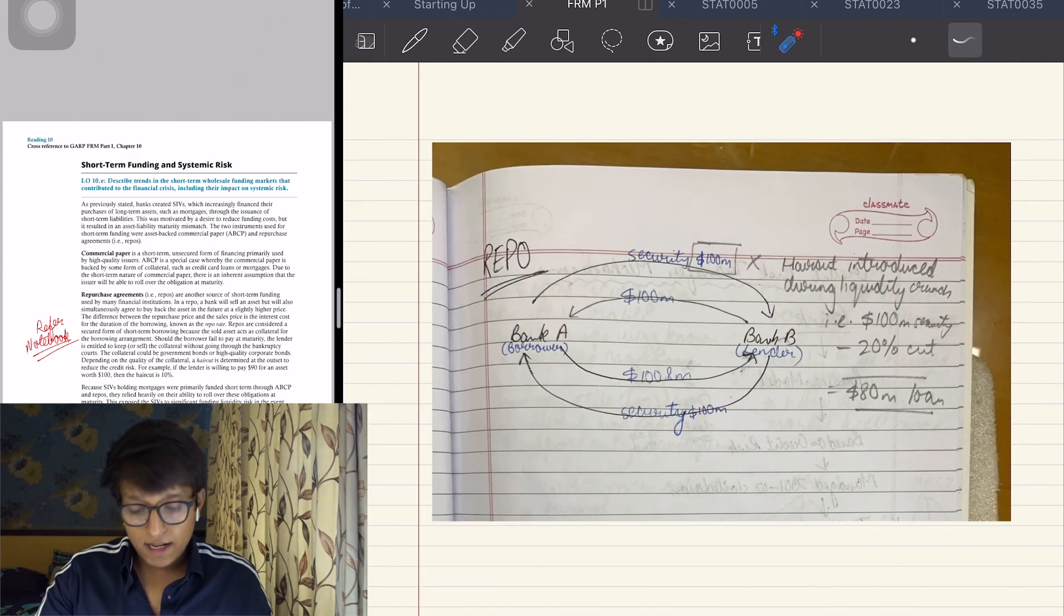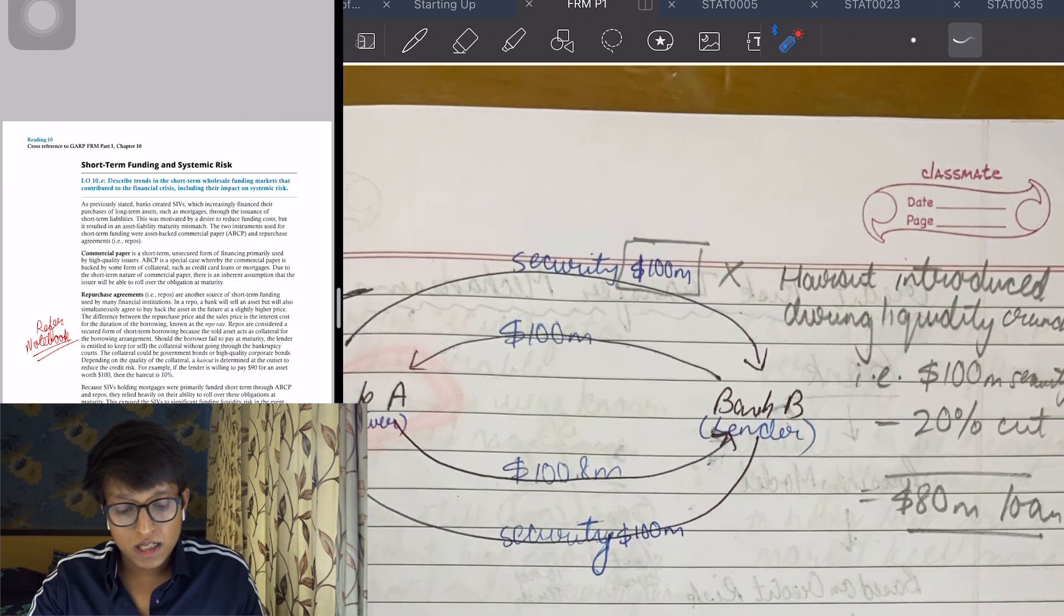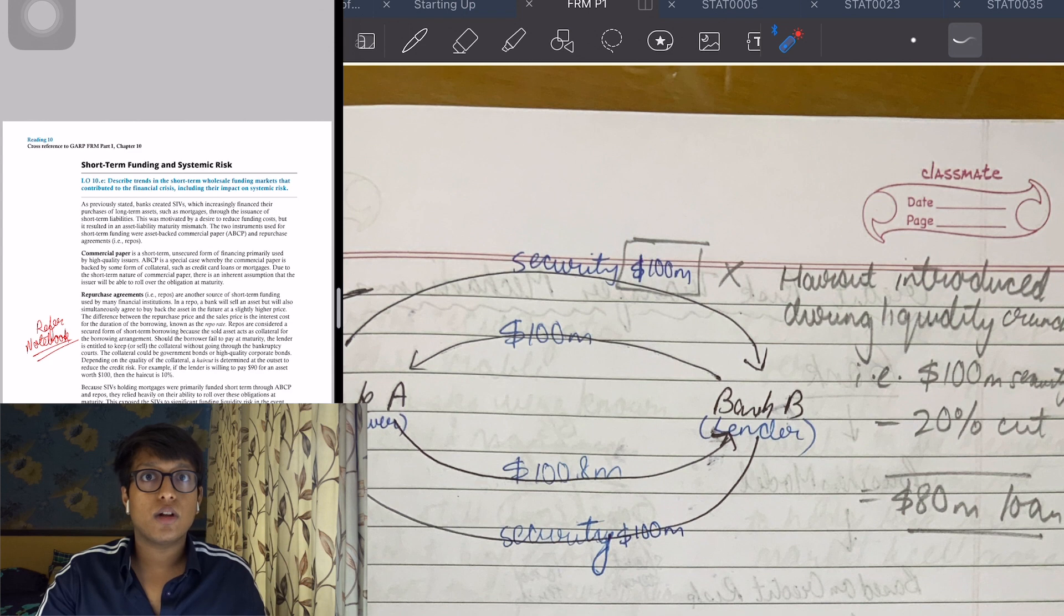What was happening was that this bank was pledging CDOs - they were giving CDOs as security which was inherently very risky and the value was falling. So this bank increased haircuts to very abnormally high levels, and again this caused a liquidity crisis.